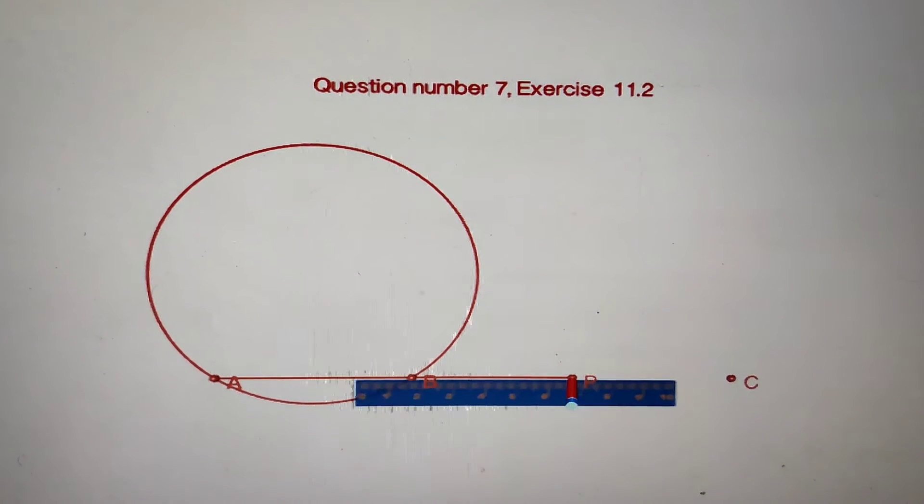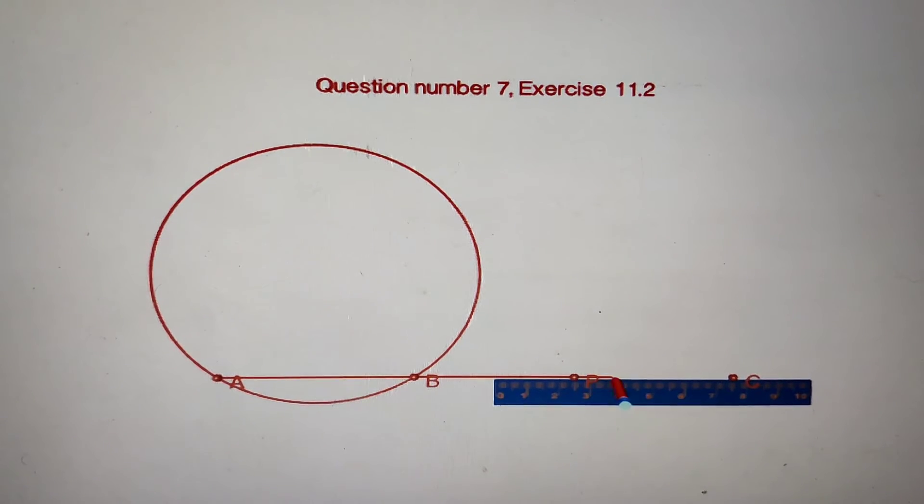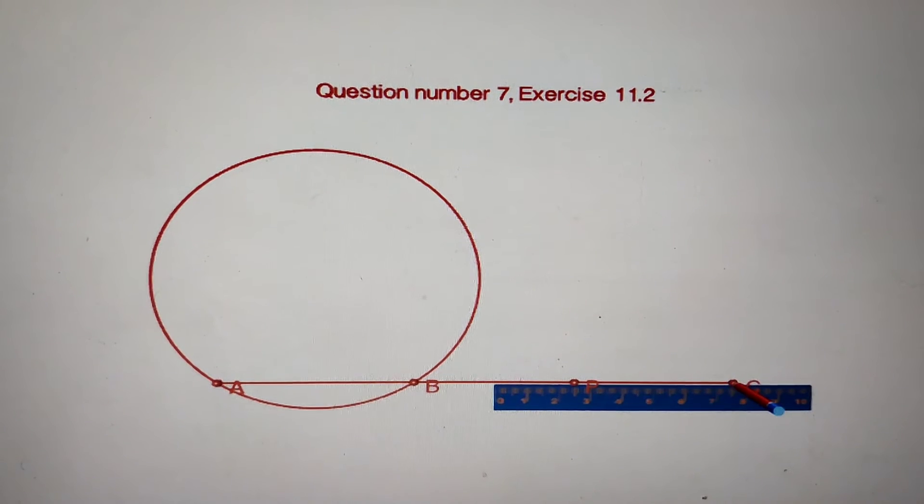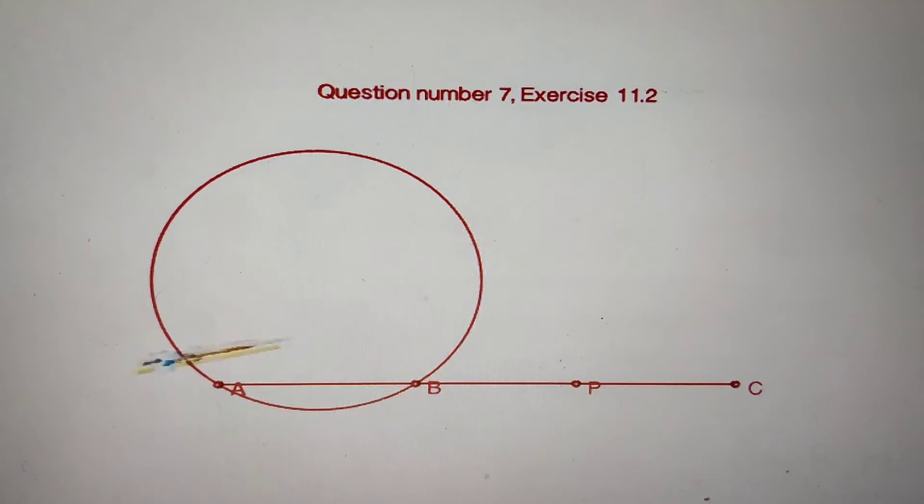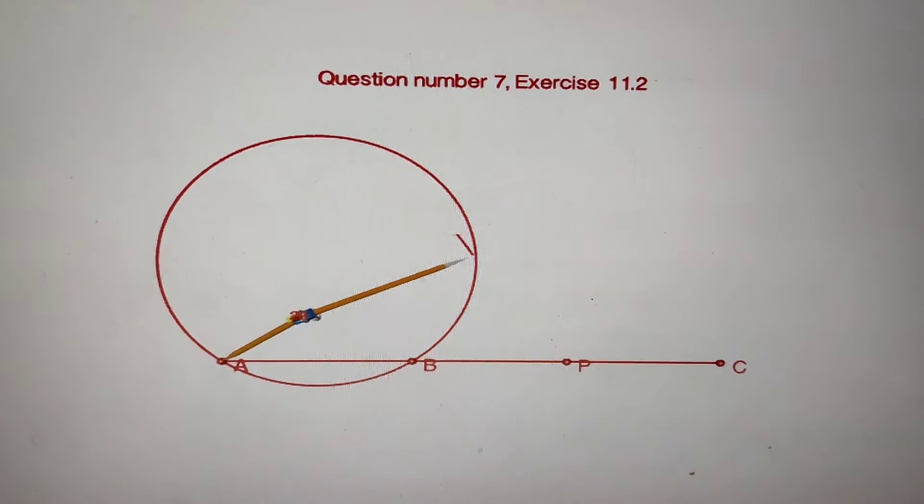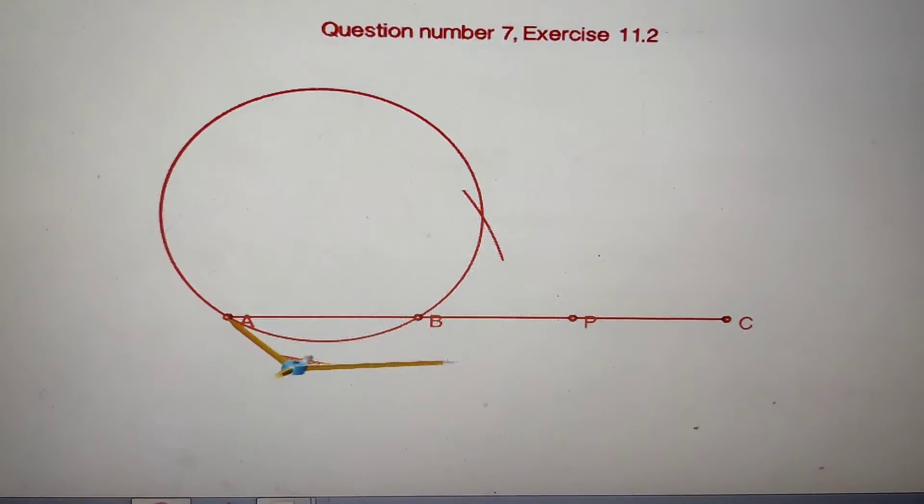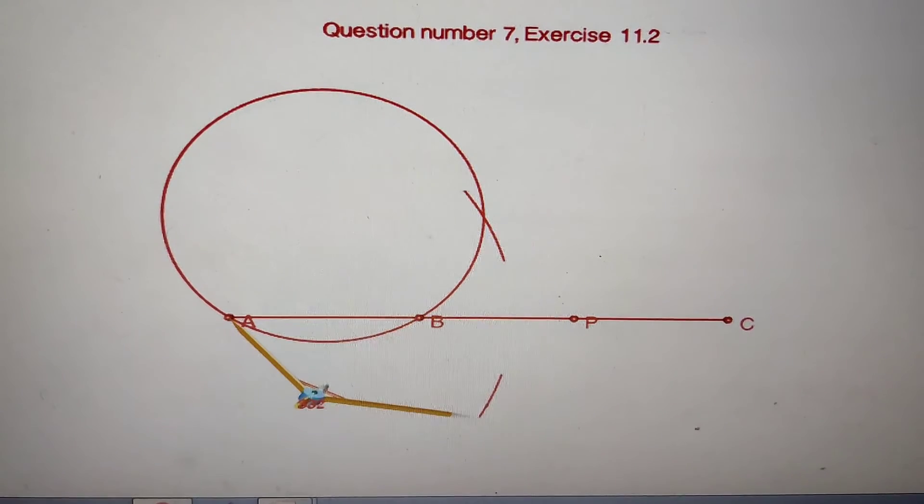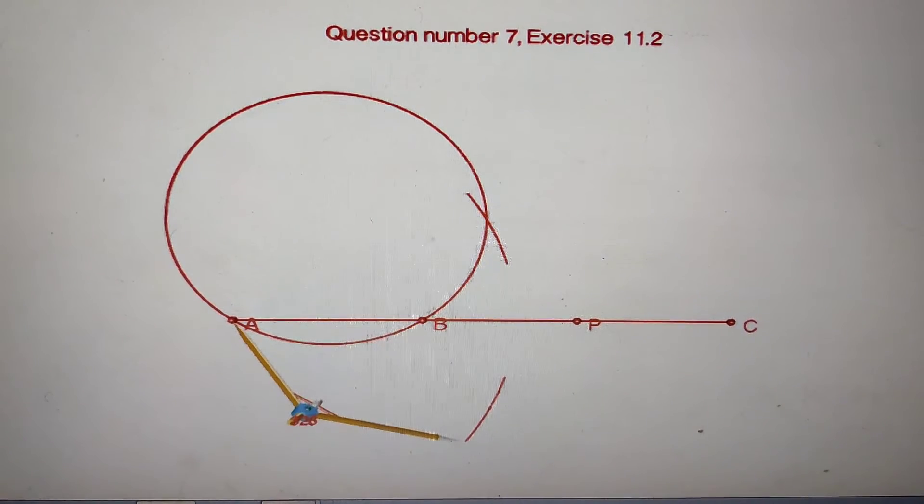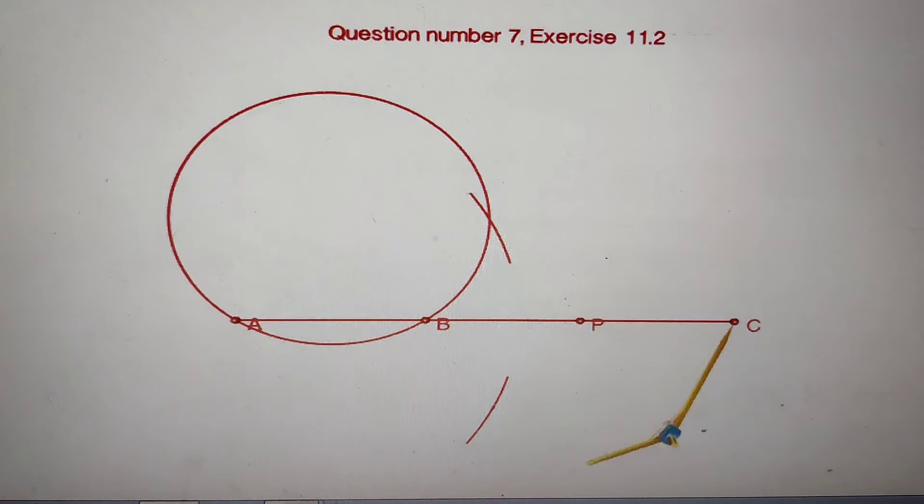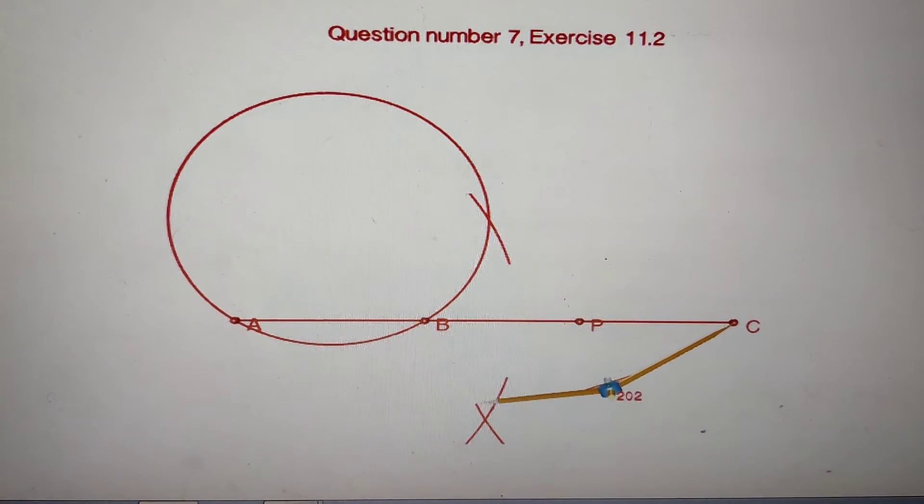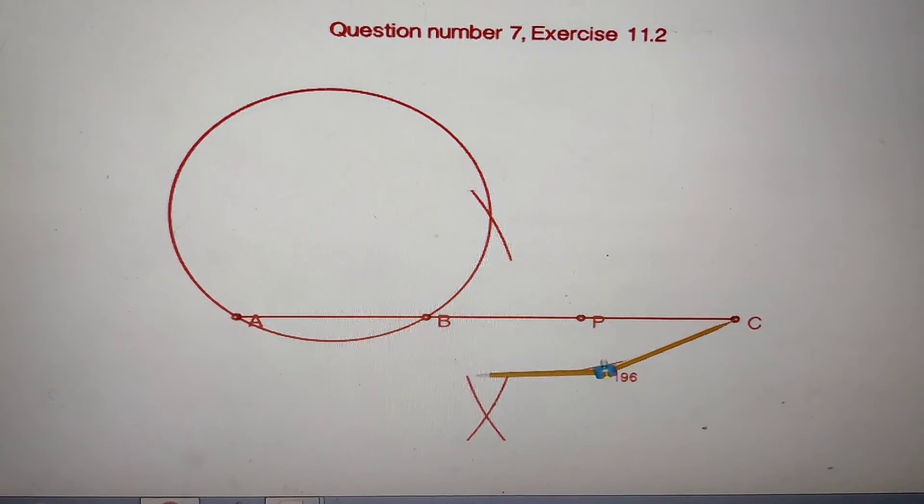Now extend the line from P to make equal lengths. Now perpendicular bisect the whole line AC. From A to C, and from C, the last point of this line segment, perpendicular bisect the line AC.